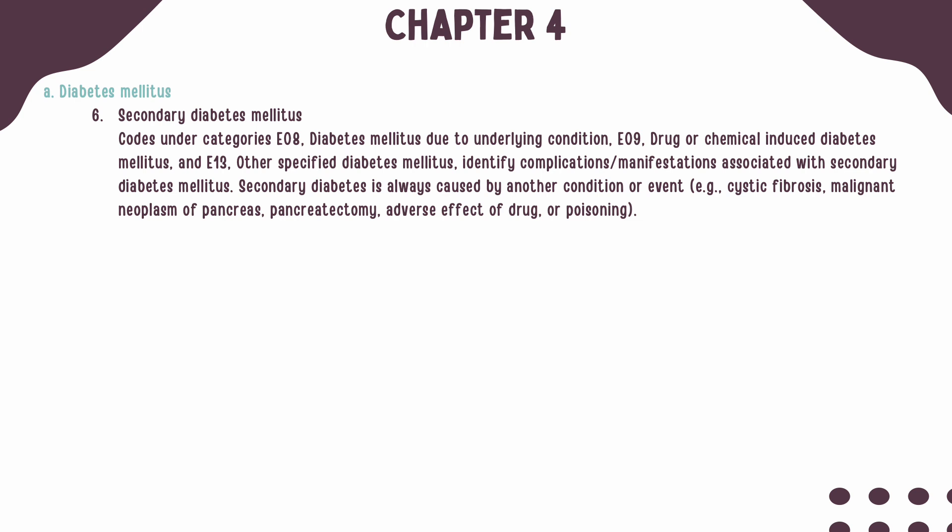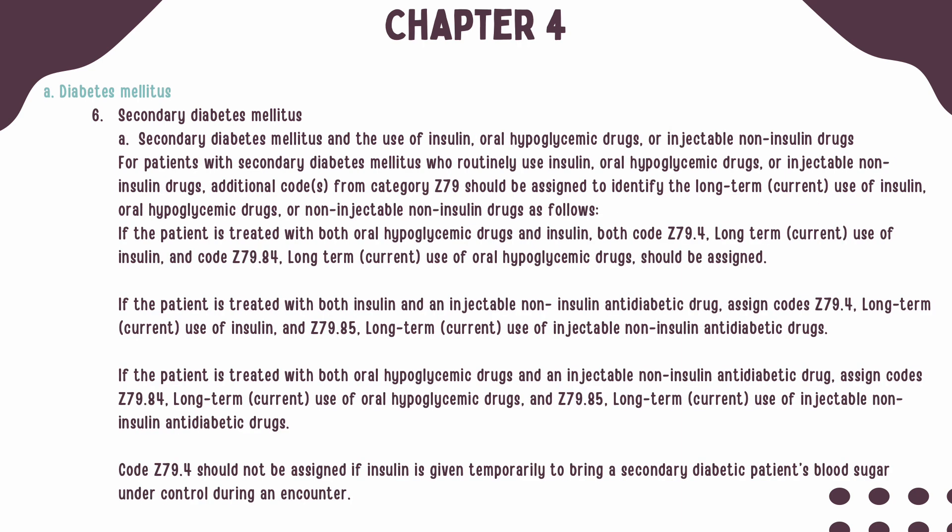Codes found in categories E08, E09, and E13 identify manifestations and complications that are associated with secondary diabetes. When secondary diabetes is present, it is always caused by another condition or event, such as cystic fibrosis, malignant neoplasm of the pancreas, and even an adverse effect of drugs and poisonings. For patients that have secondary diabetes and routinely use oral hypoglycemic or injectable non-insulin drugs, additional codes should be used to identify the long-term use of those drugs.